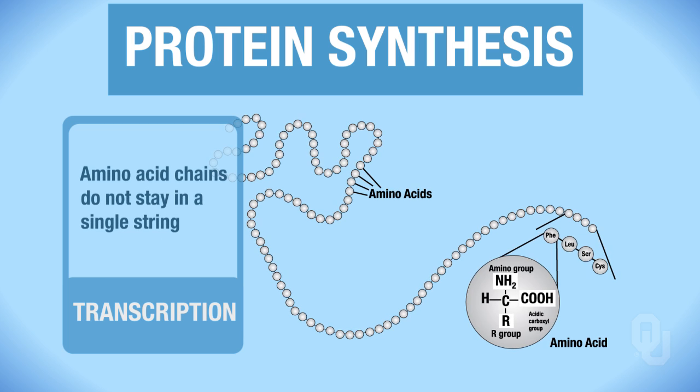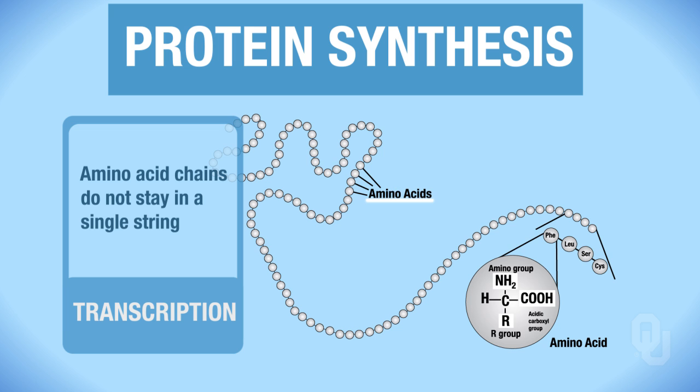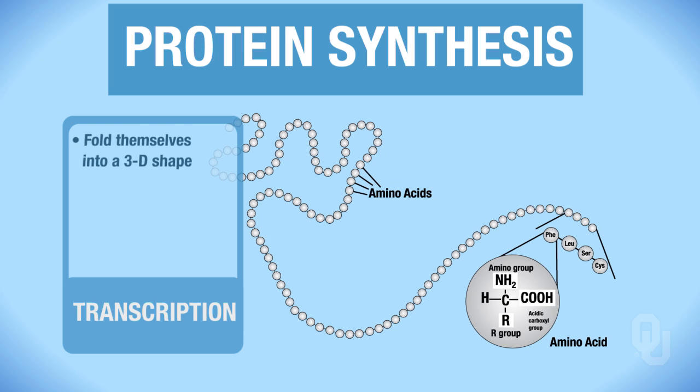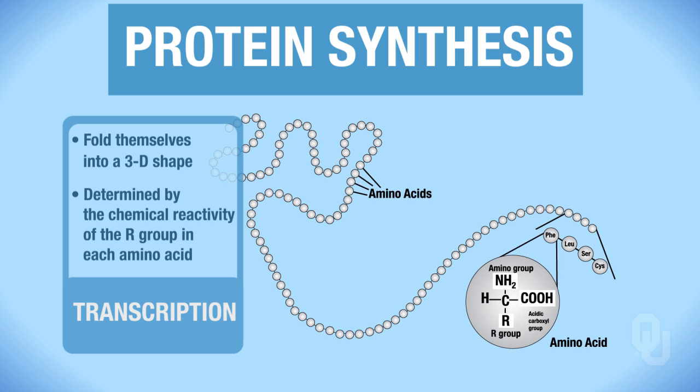Amino acid chains do not stay in a single string. So when you're viewing this image, here's your amino acids, they don't stay in this single string like this. So instead, they fold themselves into a three-dimensional shape. And that folding is determined by the chemical reactivity of the R group in each amino acid.